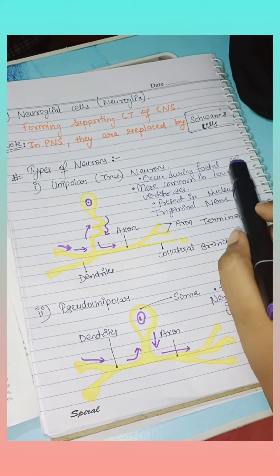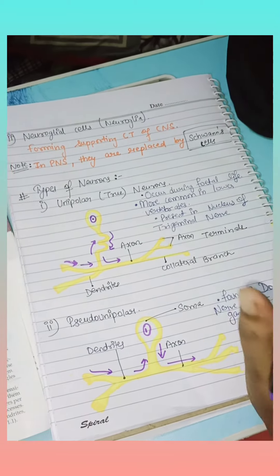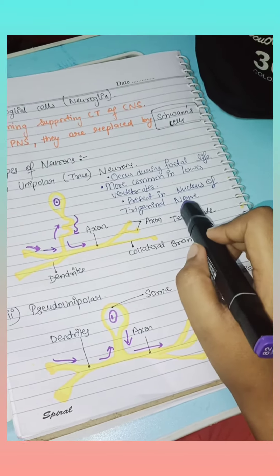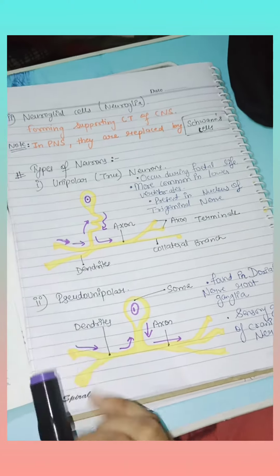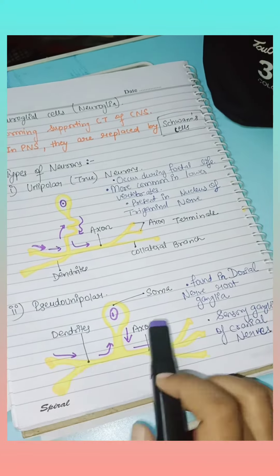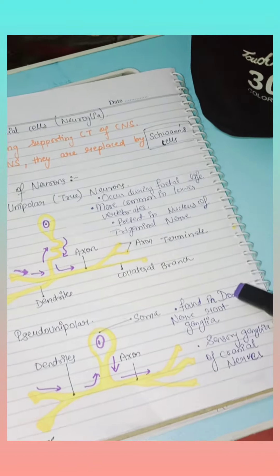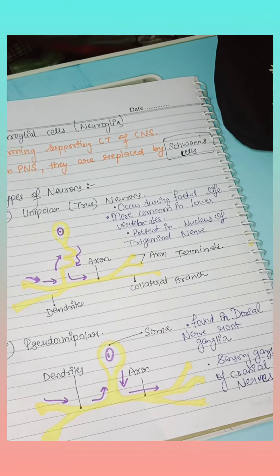It is present in the nucleus of the trigeminal nerve. Next is pseudounipolar, the second type of neuron. This is the diagram of pseudounipolar. It is found in the dorsal nerve root ganglia and sensory ganglia. The third one is the last type of neuron.